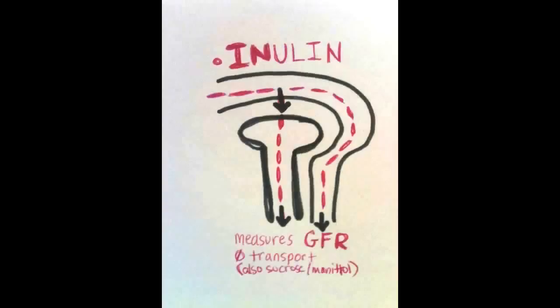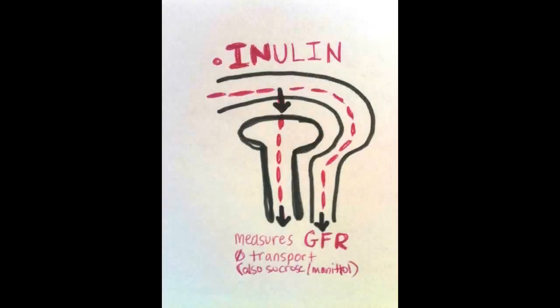Next up is inulin — not to be confused with insulin; they're completely different substances. Inulin is only filtered. It's not reabsorbed or secreted. For this reason, inulin is a good way to determine GFR, or glomerular filtration rate.